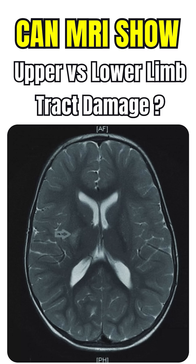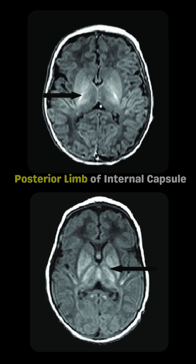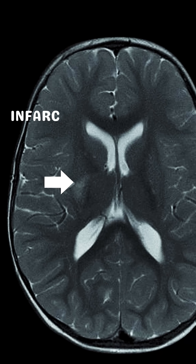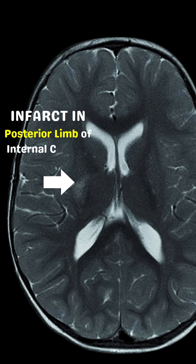One question many therapists have is: can we see in the MRI which fibers are damaged? Here are two MRI images showing the posterior limb of the internal capsule, and there is an infarct here in the posterior limb.